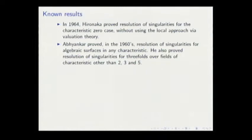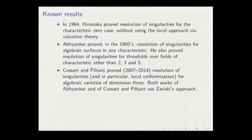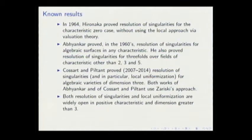It's well known that in 1964 Hironaka proved resolution of singularities in characteristic zero for any variety. But the case of positive characteristic is not known. The best results are Abhyankar's: in the 1960s he proved dimension two and dimension three under certain conditions on the characteristic of the field. Recently Cossart and Piltant proved resolution of singularities for dimension three independently of the characteristic. Both works use Zariski's approach.